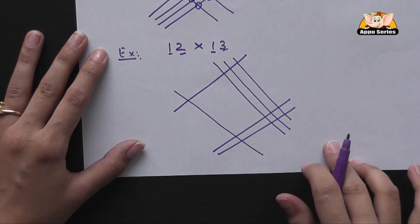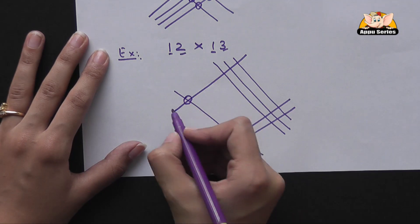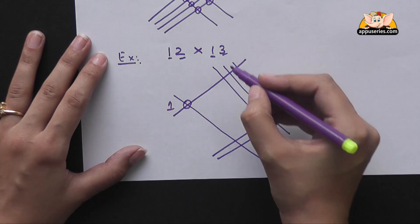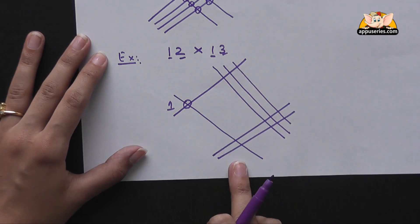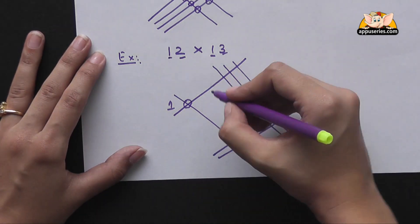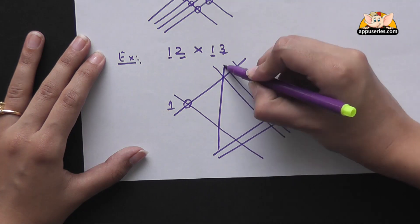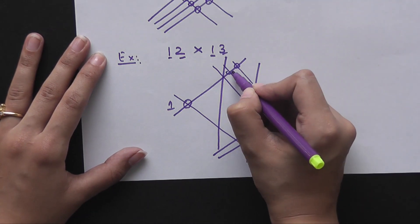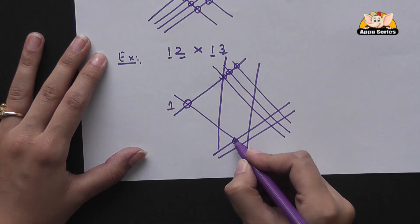So now we will count the points. Here it is 1. Now we have to count these together. So you have 1, 2, 3, 4, 5.